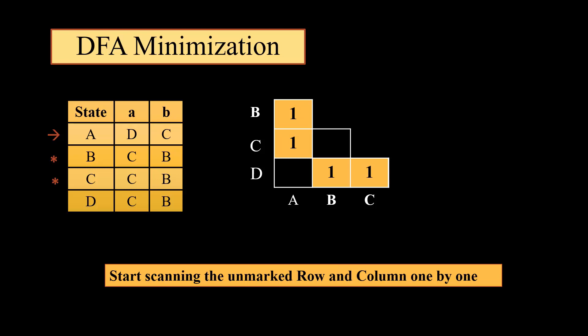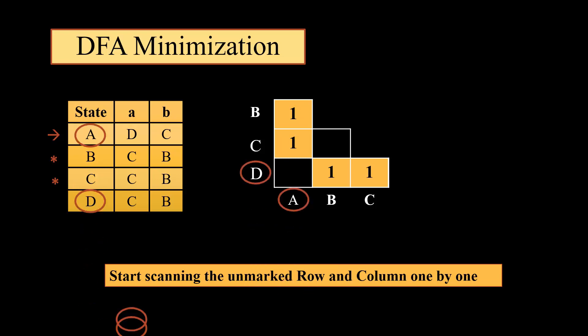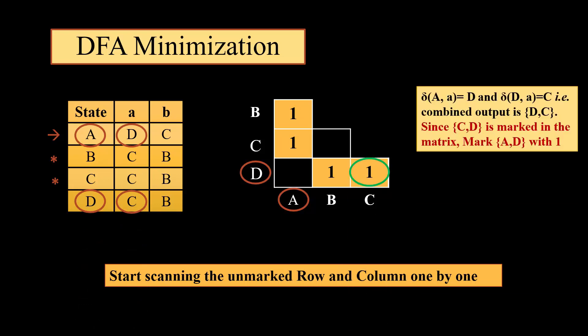All the states which are left out we will check by scanning one by one. We start with AD. AD on A gives us DC. Since DC is marked, we will mark AD.